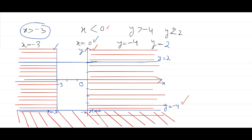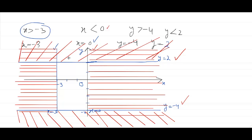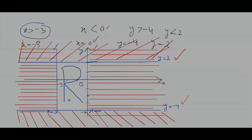The fourth line is y equal to 2, and it is y is less than 2, so the required region is the downside of this line, but we will shade the upside. So we have shaded the upside of this line as well. The region left which is unshaded is here in between — write a big R here — this is our required region, the unshaded region.